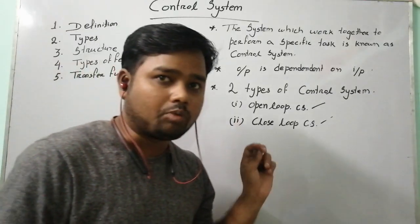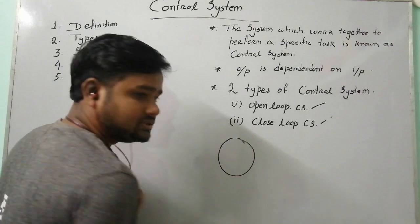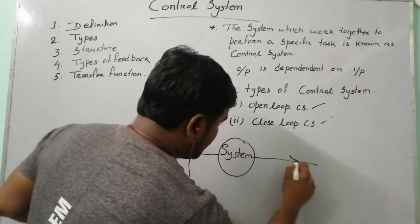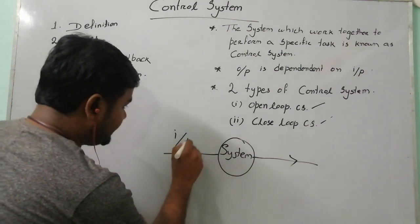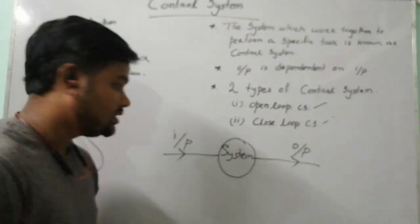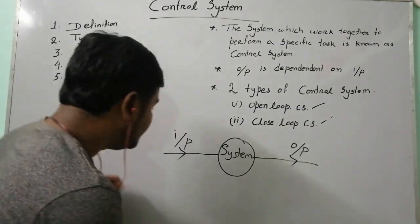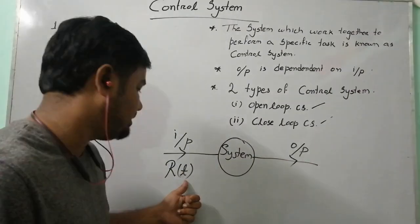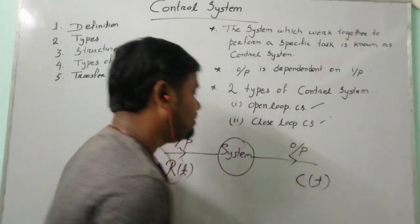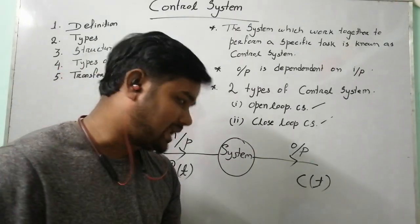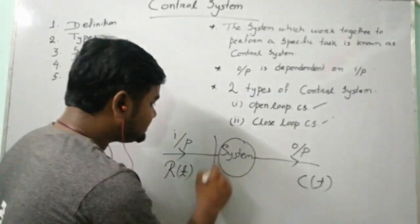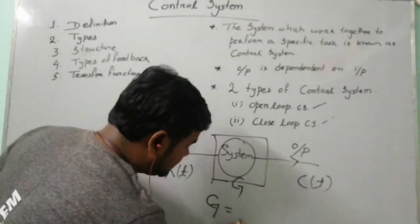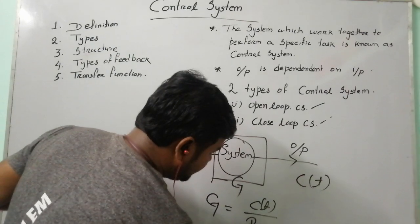There is one input part and one output part. In this control system, the input is represented by r(t), which depends upon the time domain, and similarly the output is represented by c(t), which also depends upon the time domain. In this system there must be a gain, denoted by capital G, and G is equal to c(t) divided by r(t).